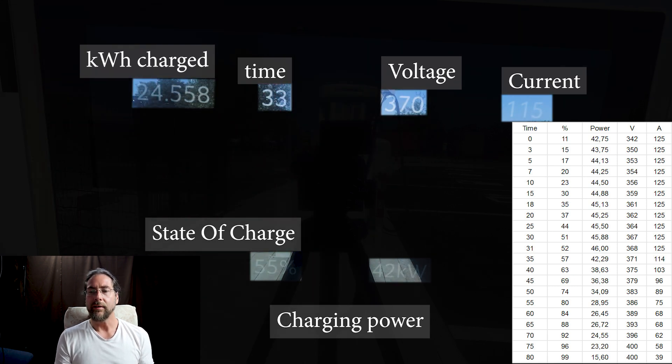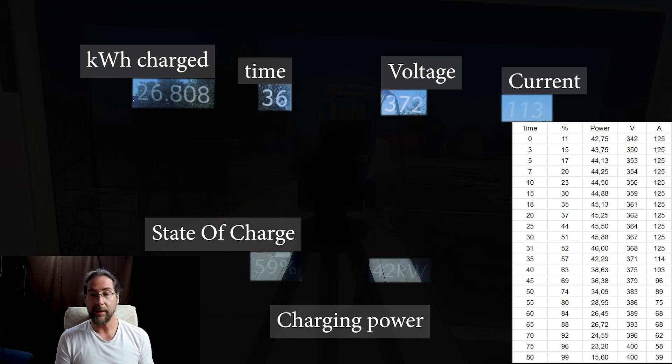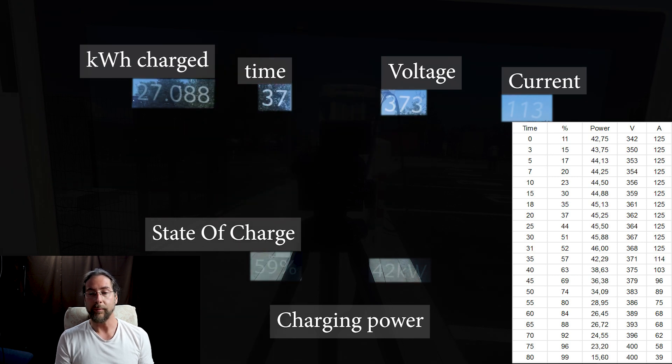Voltage is still going up, amps are going down, and therefore your kilowatt charging power is going down. After 35 minutes we have 26 kilowatt hours charged at 58 percent. You can see me walking in the back when I was charging.